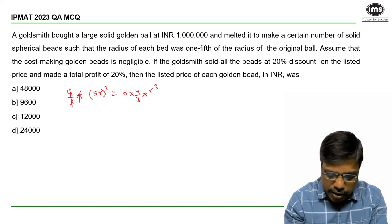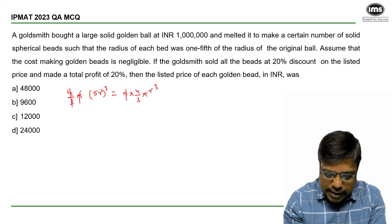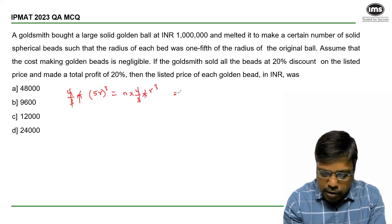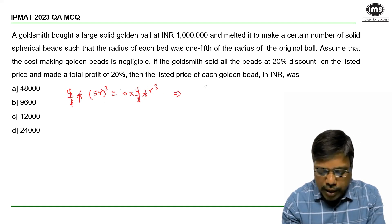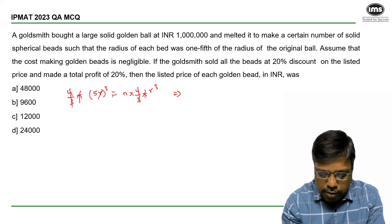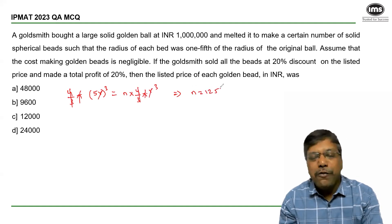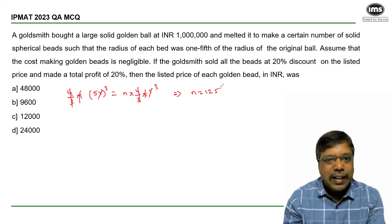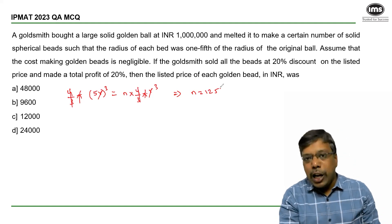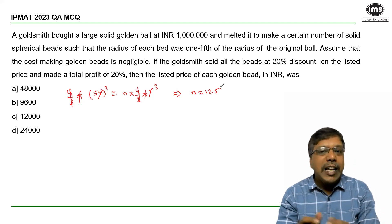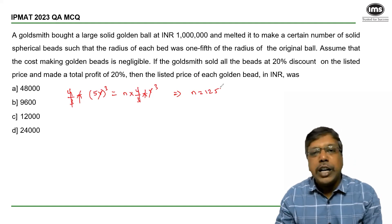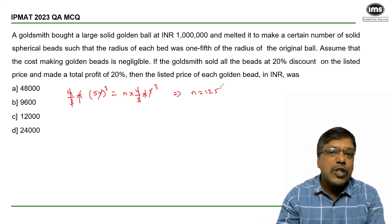Now (4/3)π gets cancelled out, and R³ on both sides also gets cancelled. So from here I get n is equal to 125. So the big spherical ball was melted and converted into 125 small spherical balls.